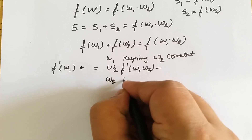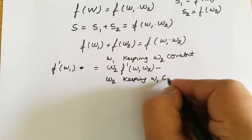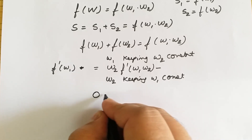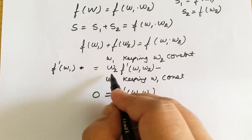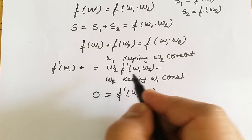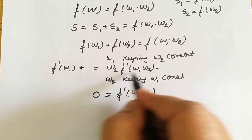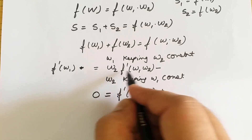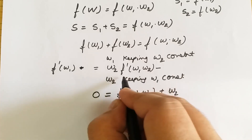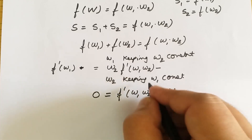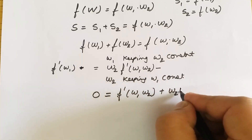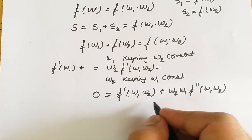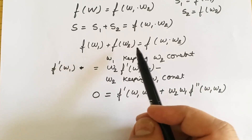We then differentiate with respect to W2, keeping W1 constant. The left side becomes zero. For the right side, applying the product rule: differentiating W2 gives 1 times f'(W1·W2), plus W2 times W1 times f''(W1·W2). Since W1·W2 = W, we can write this in terms of f'(W) and f''(W).